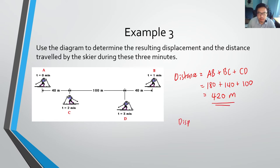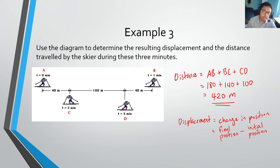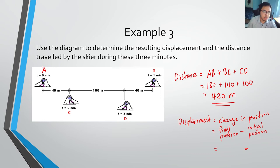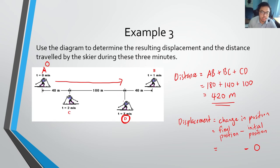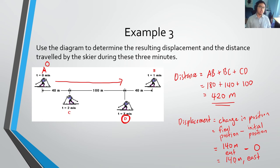What about the skier's displacement? When thinking about displacement, you only need to consider the change in position — the difference between the final position and the initial position. The initial position is A and the final position is D. Position D is 140 meters to the east, so 140 minus zero is still 140 meters. The displacement of this skier is 140 meters east from her starting position.